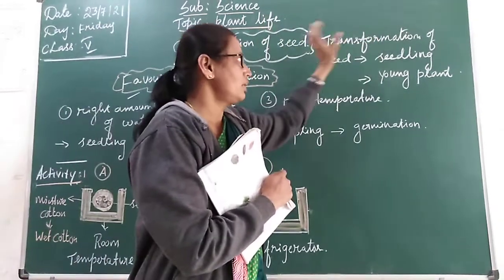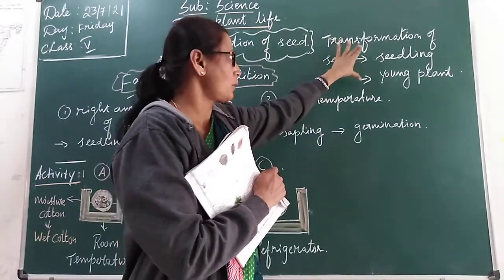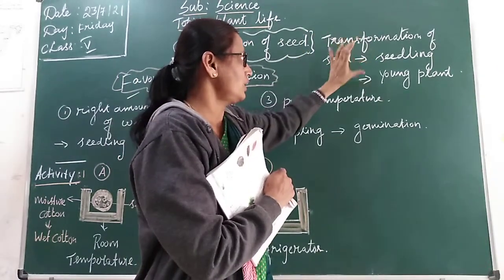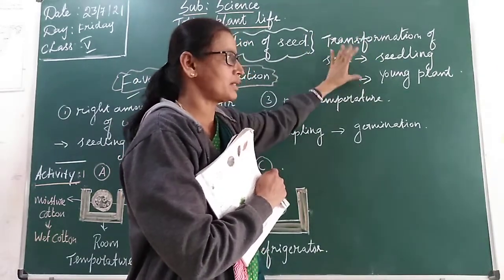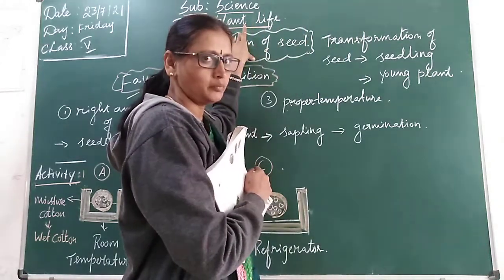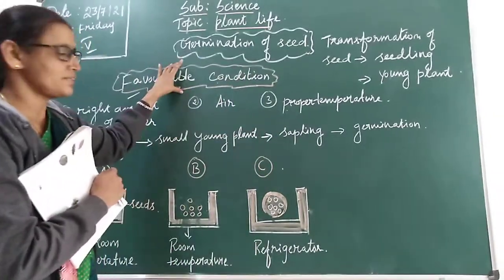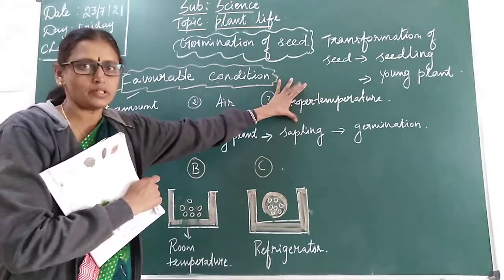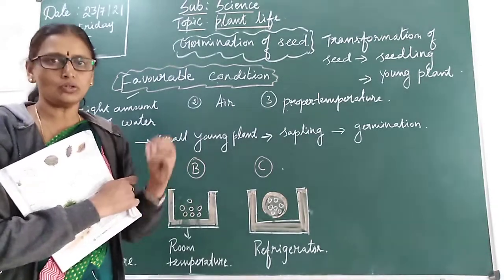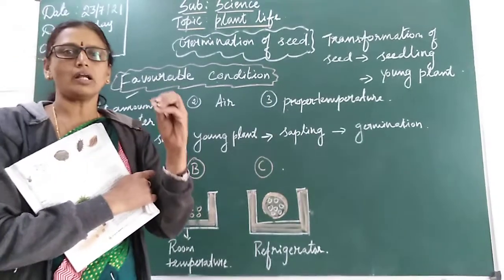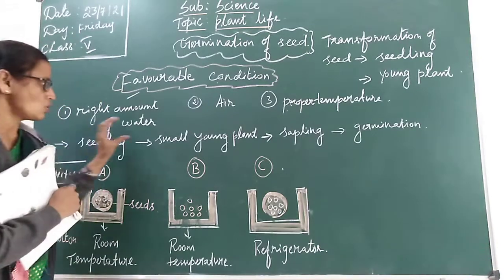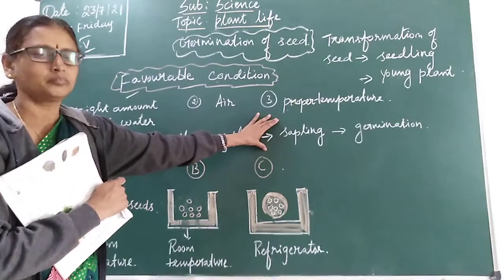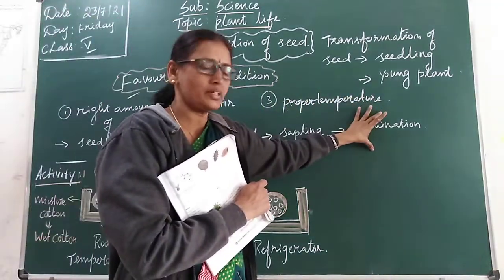Transformation of seed into seedling or young plant is called germination. When a seed gets favorable conditions such as right amount of water, air, and proper temperature, it grows into seedling or young plant. This seedling grows into small plant called sapling. This process is called germination.